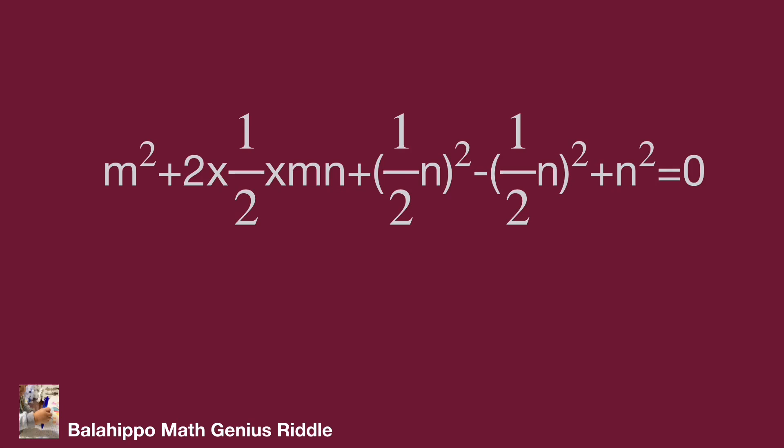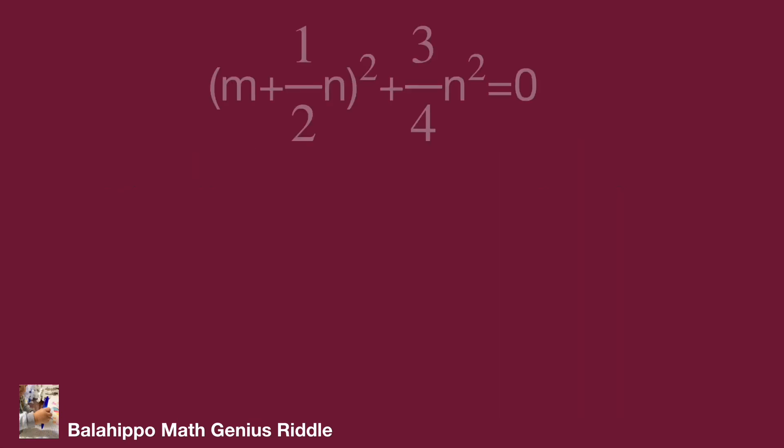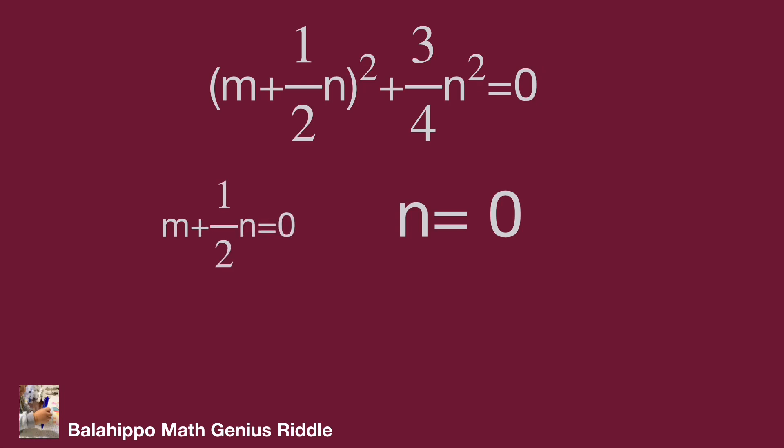Then merge all these items to get: quantity (m + 1/2 n) squared plus (3/4) n squared equals 0. Since a and b are real numbers, m and n are real numbers too. For the sum of these two square items to equal zero, the solution requires (3/4) n squared equals 0, so n equals 0. And (m + 1/2 n) equals 0 — substituting n equals 0 gives m equals 0.